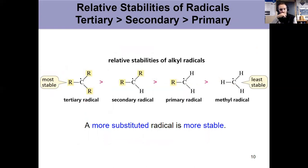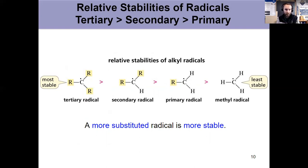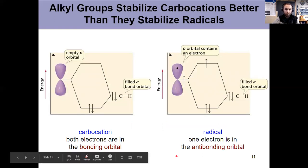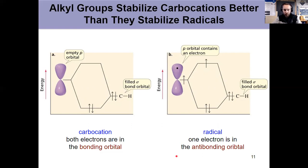Radical stability mirrors carbocation stability. The differences in stability aren't as great as for carbocations, but hyperconjugation still applies. A more substituted radical is more stable: tertiary is most stable, followed by secondary, then primary, then methyl radical being least stable. These different stabilities are reflected in the percentages of products obtained from radical mechanisms.